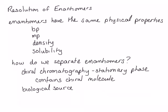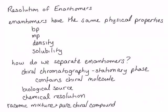The final way to obtain a single enantiomer is through a method called chemical resolution. In chemical resolution, we take a racemic mixture and react it with a pure chiral compound. This reaction produces two diastereomers. Since diastereomers have different physical properties, we can then separate the two compounds based on their physical properties. Let's look at an example.